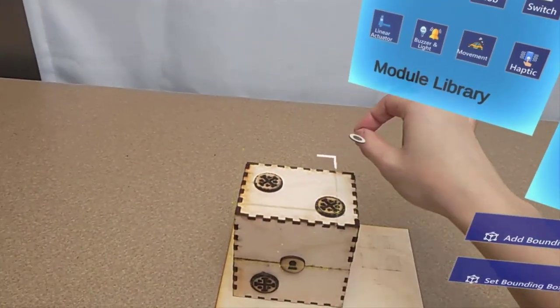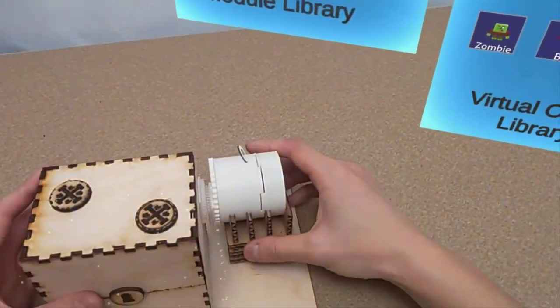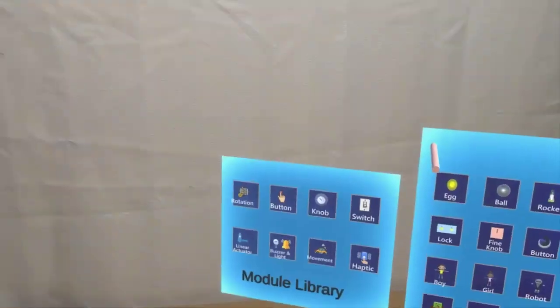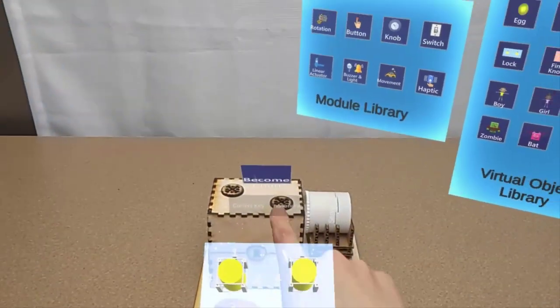In this case, users need to draw a bounding box around the chest, select the rotation module from the library, and attach the virtual lock to the chest.